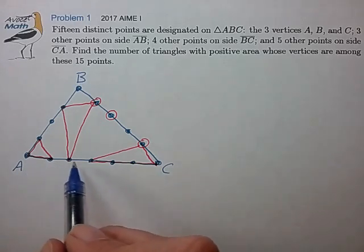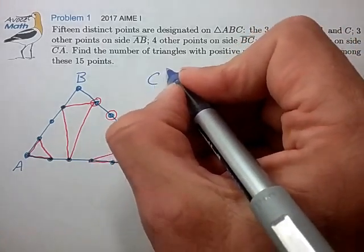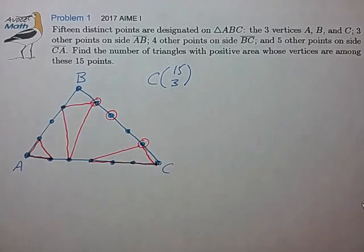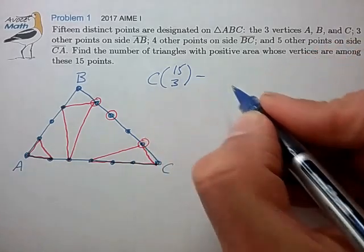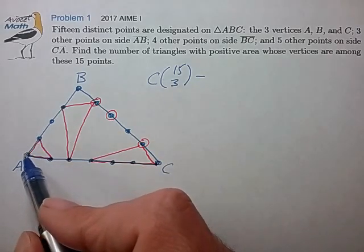So, if we select any three points of these 15 points, the number of ways that we can do that is 15 choose 3, and we want to subtract from that the number of ways that we can form invalid triangles.